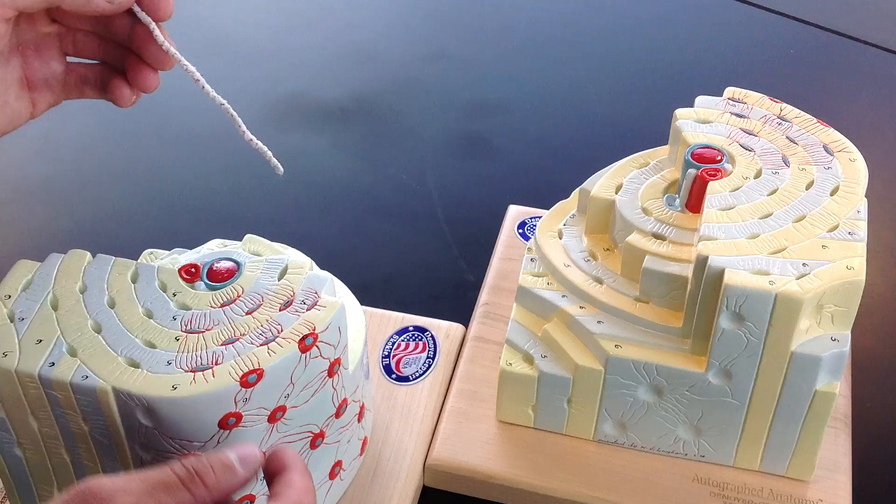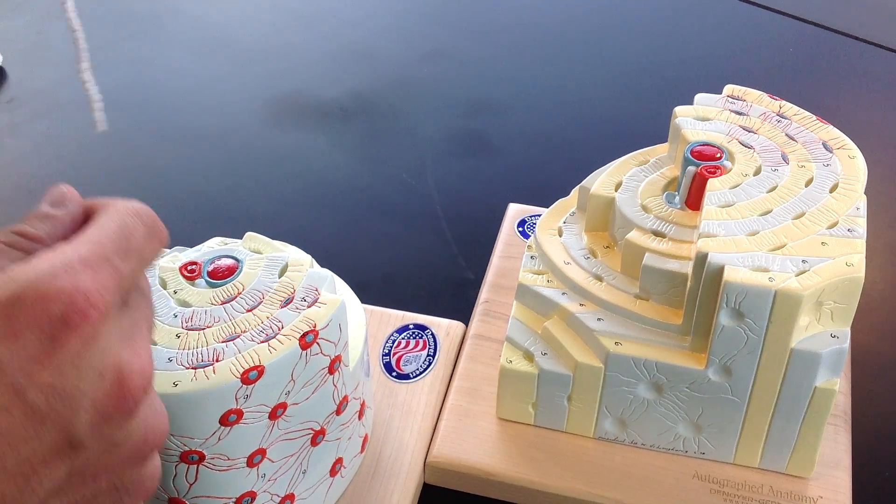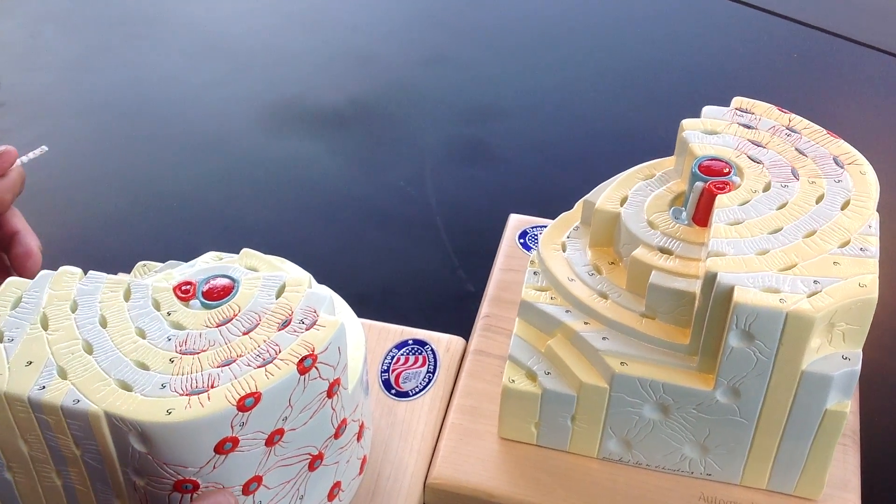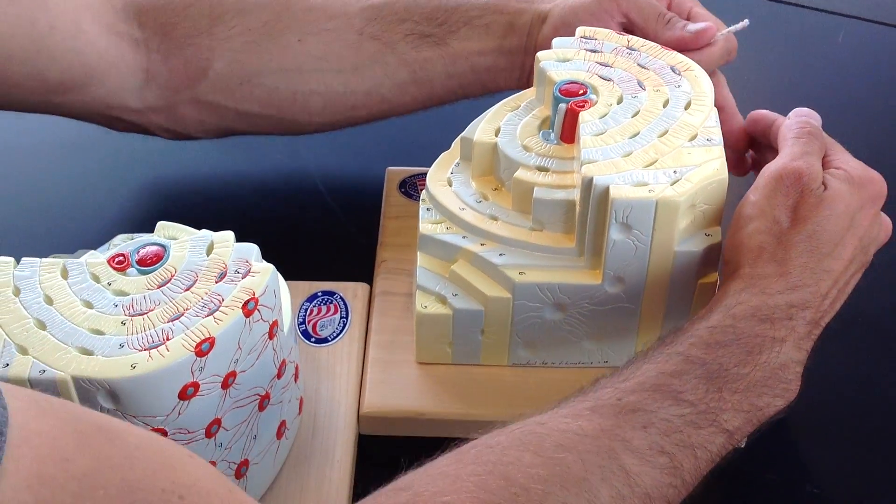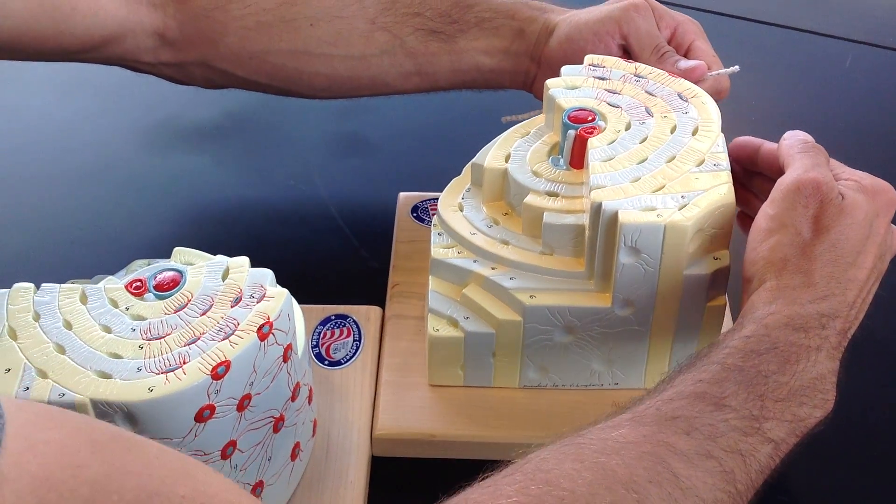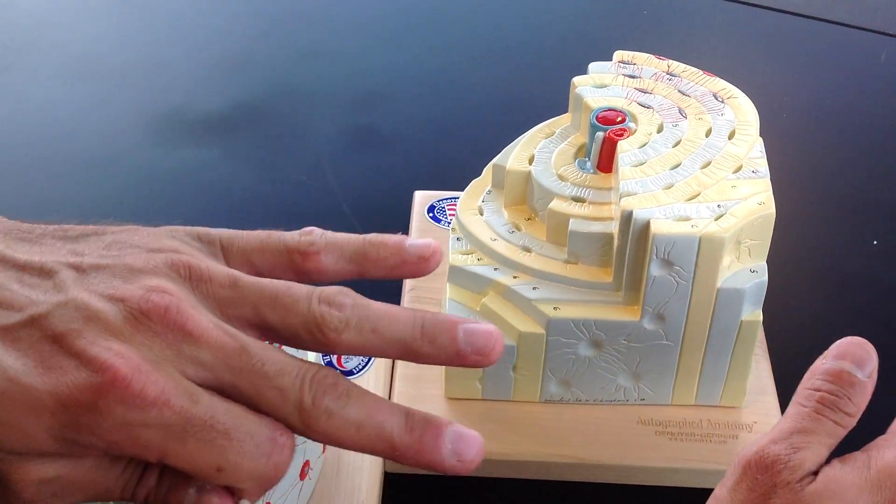And then you are going to have circumferential lamellae which are actually lamellae that go all the way outside the bone and house all of the osteocytes that you see when you take a cross-section.